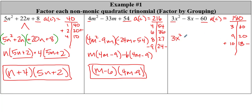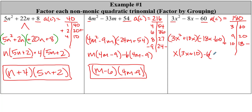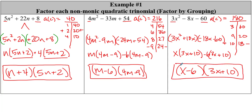Let's rewrite this: 3x² plus 10x, group those, minus 18x minus 60. 3x² and 10x — we can take out an x, leaving 3x plus 10. The biggest thing we can take out here is a negative 6, leaving 3x plus 10. These match, so we got (x − 6)(3x + 10). Not much different from when our coefficient was 1 — we just have a larger set of factors. Same three types: plus-plus, minus-plus, and negative C.